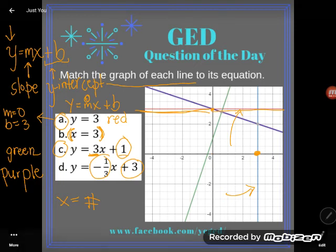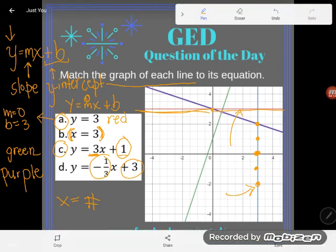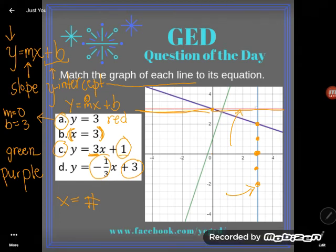You know, this is the point 3, 0, but here's the point 3, 1, 3, negative 1, and 3, 2, 3, negative 2. I'm on the line where no matter what y is, x is always 3. So there it is. That's the blue line.